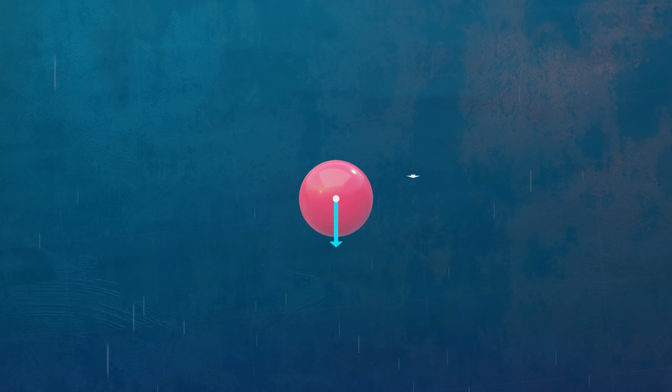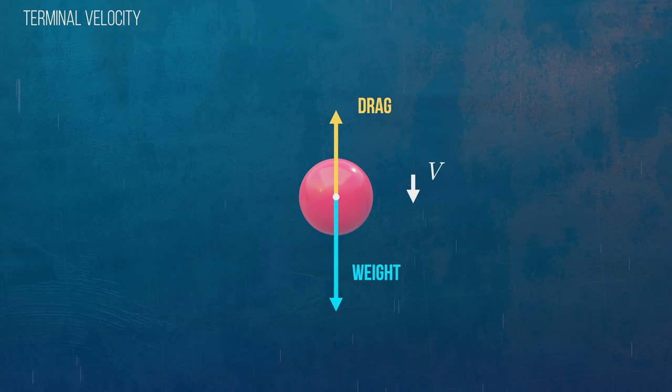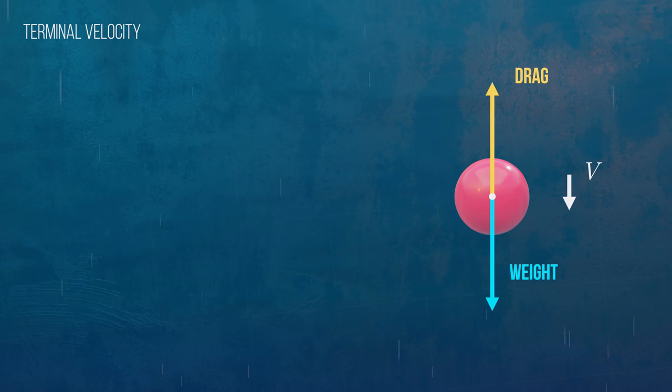As a sphere falls through a fluid, its velocity will increase, and so will its drag force. Terminal velocity is reached when the weight of the sphere perfectly balances the drag force, so that the sphere stops accelerating.